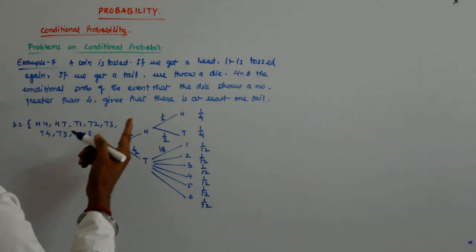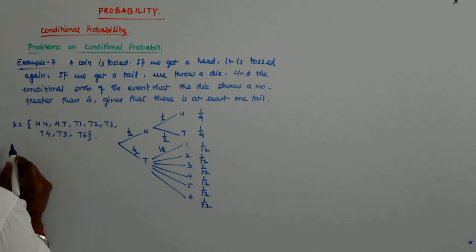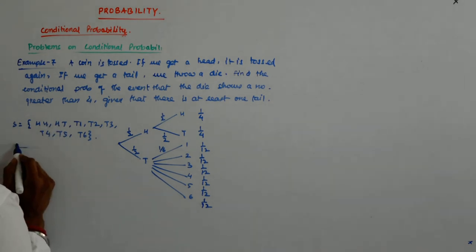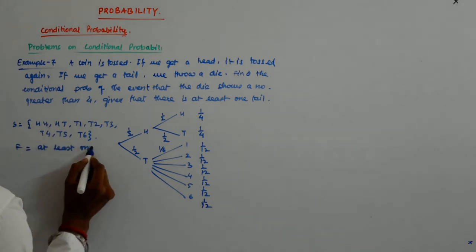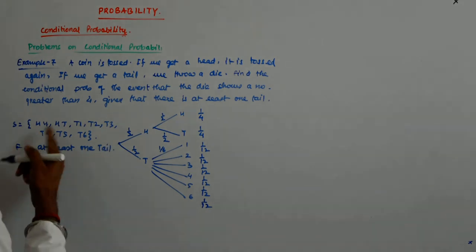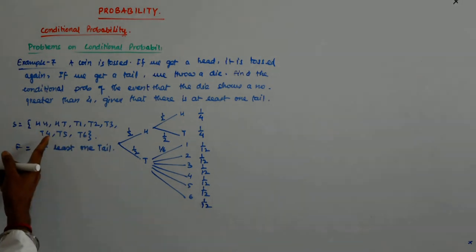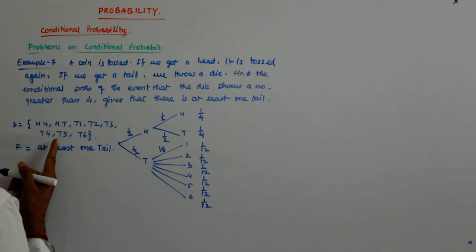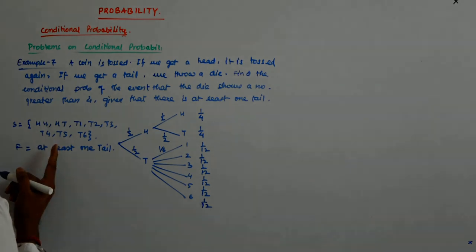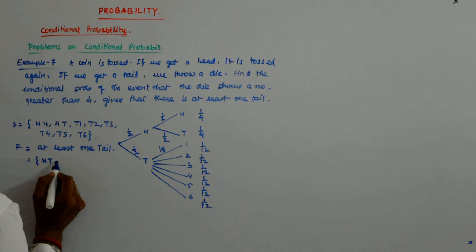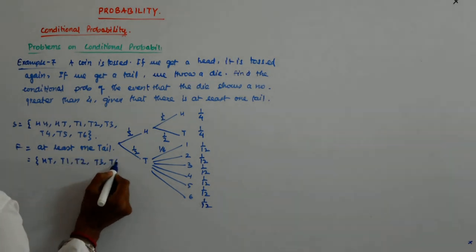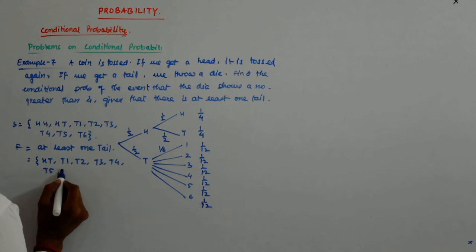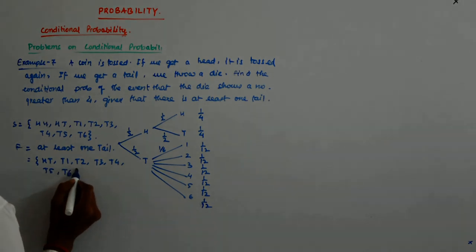And what has happened? At least one tail. F is at least one tail. What is that? At least one tail is: HT, T1, T2, T3, T4, T5, T6.